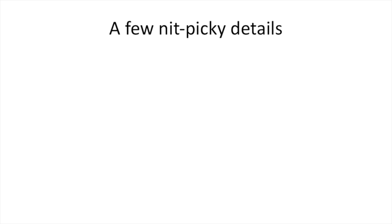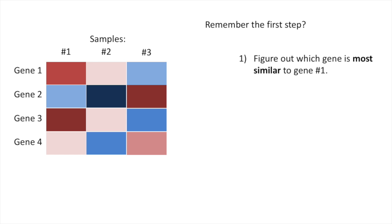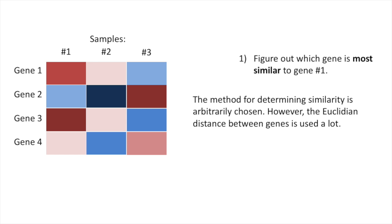Now let's go over a few nitpicky details. Remember the first step — figure out which gene is most similar to gene number one? Well, we have to define what 'most similar' means. The method for determining similarity is arbitrarily chosen. However, the Euclidean distance between genes is used a lot.